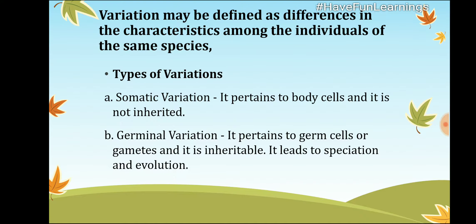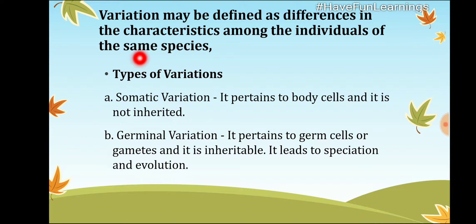Next we will talk about variation. Variation refers to differences among individuals of the same species. For example, twins show characteristic differences. The types of variation are: somatic variation and germinal variation.